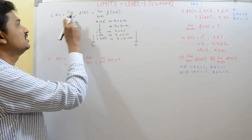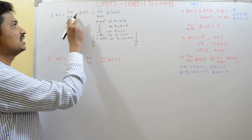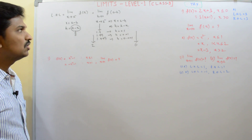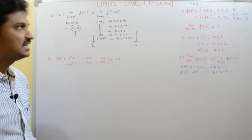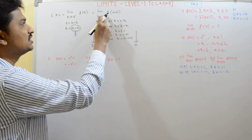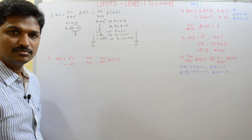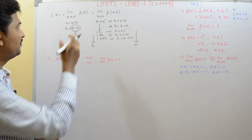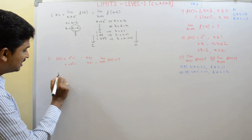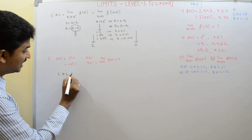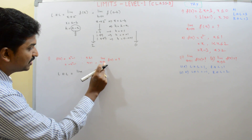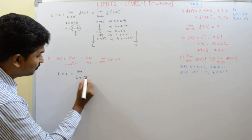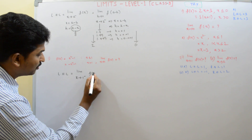And what are the x values when x approaches to a from left? x is slightly less than a — that is what we written here. So, limit x tends to a minus f of x is written as limit h tends to 0 f of a minus h. With this example, we will try to find the left hand limit of this function. Left hand limit — we need to find it when x approaches to 1.